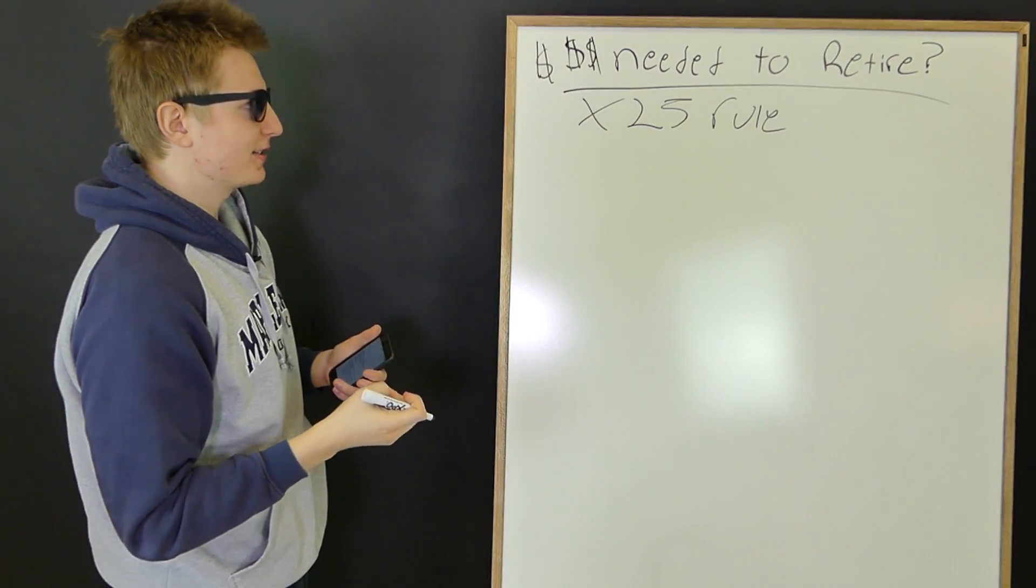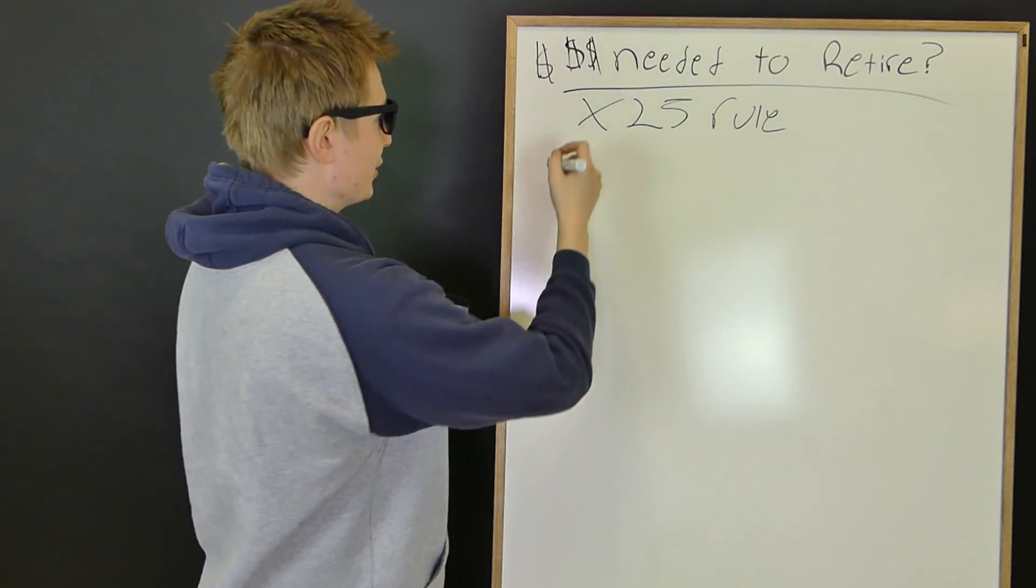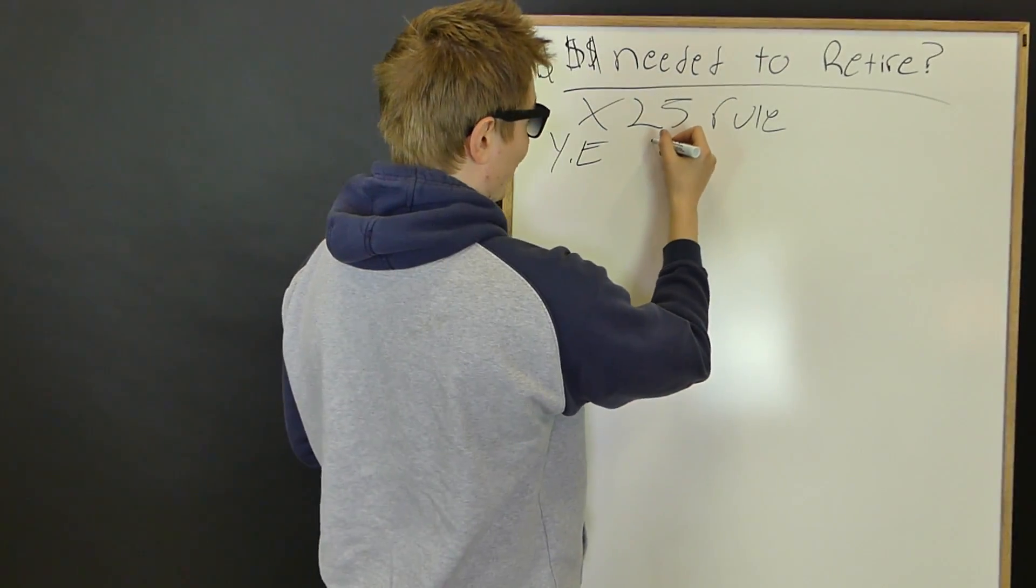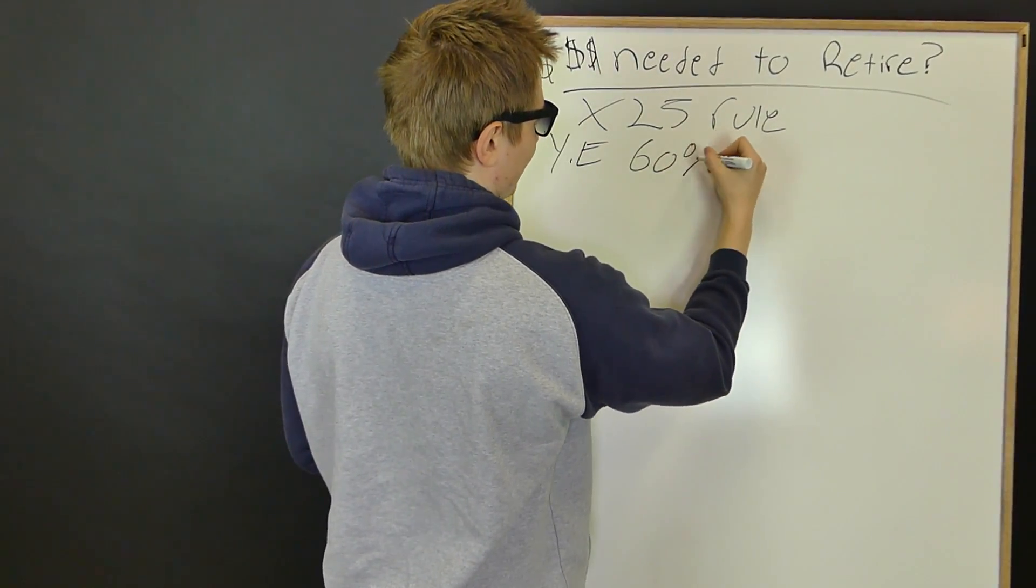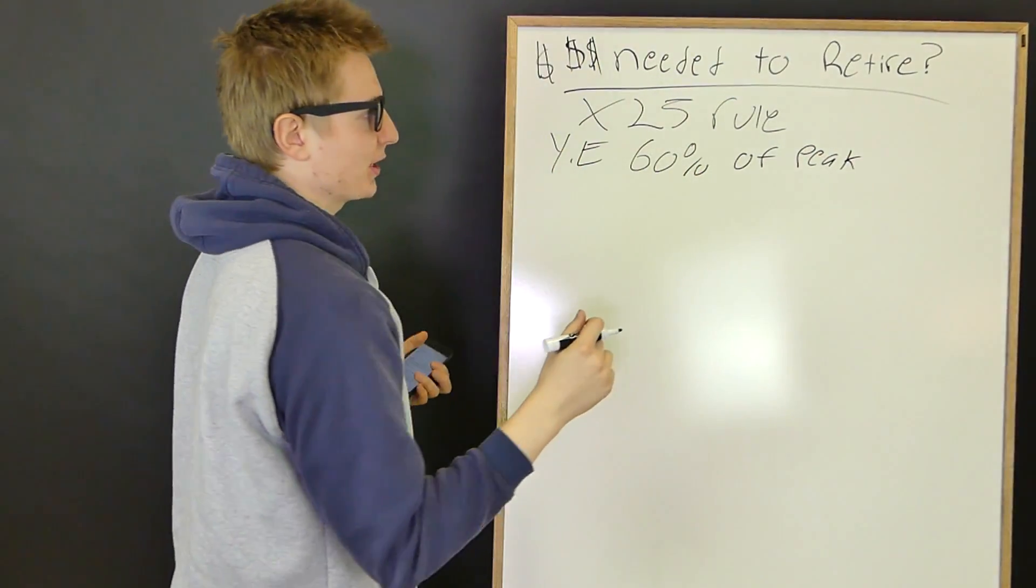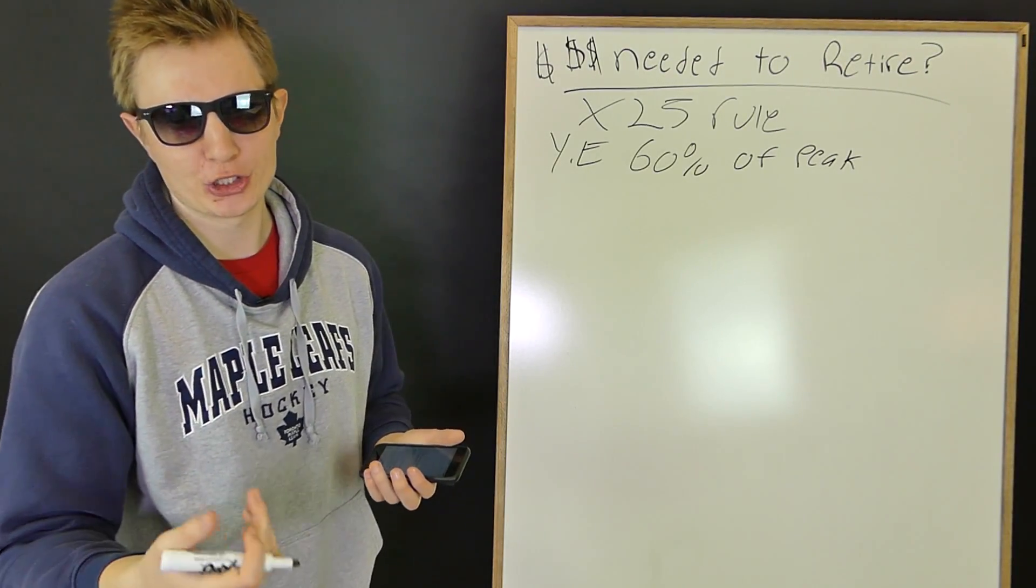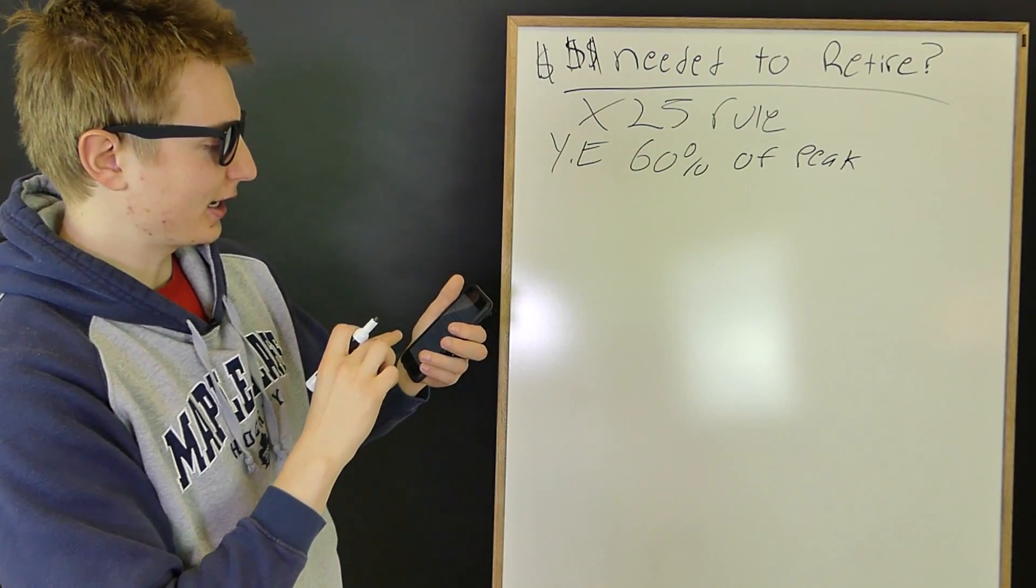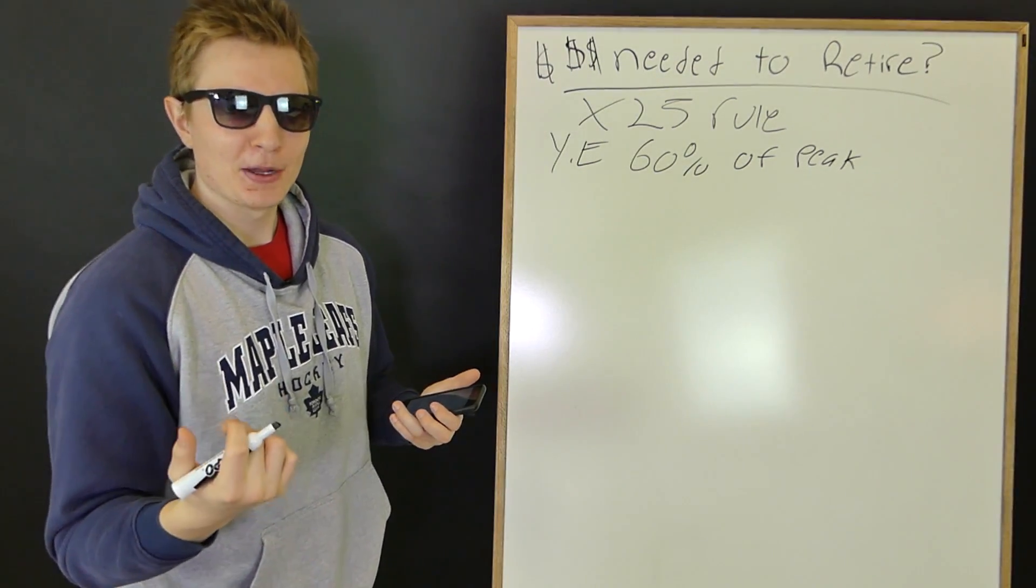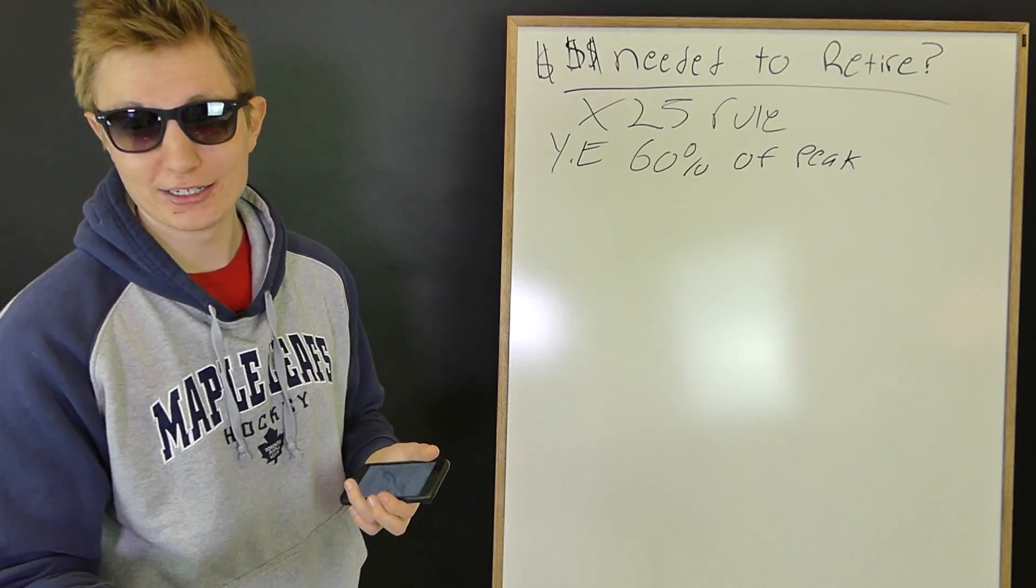So the times 25 rule means that take your typical yearly expenses. And by the way, your yearly expenses are typically, when you retire, about 60% of peak income. So whatever 60% of your peak income is before you retire, that's what your yearly expenses should be. So anyways, we're going to get to this here. So whatever your yearly expenses are, times that by about 25. And that's about how much money you need for retirement. It's really simple.